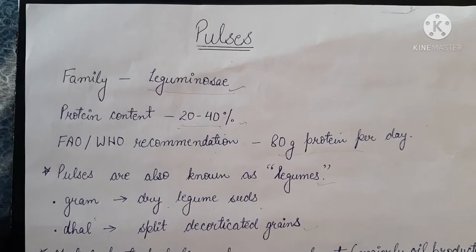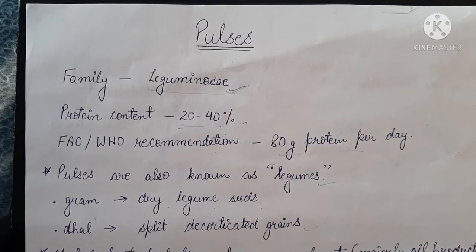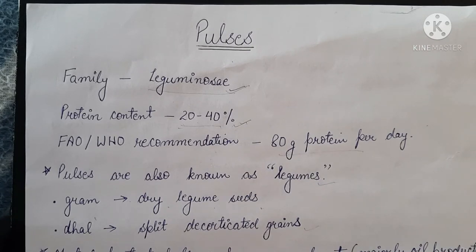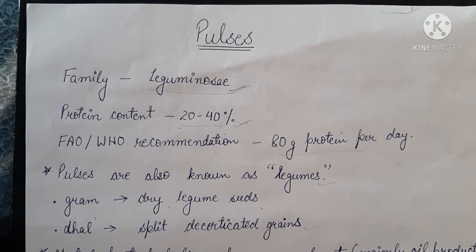Pulses are the edible fruits or seeds of pod-bearing plants belonging to the family Leguminosae, and are widely grown throughout the world. They have a high protein content ranging from 20 to 40 percent, which makes them important in human food from a nutritional point of view. There is widespread protein-calorie malnutrition in developing countries, and pulses can play an important role in bridging the protein gap. India depends greatly on pulses to meet its demand for proteins because meat is not widely consumed due to religious sentiments, and pulses are known as the poor man's meat.